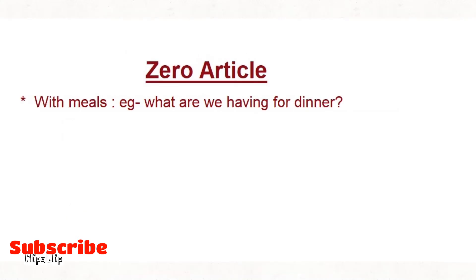The third rule is with meals. How do we say it — 'What are we having for dinner?' or 'What are we having for the dinner?' It is wrong to say 'the dinner', 'the breakfast', or 'the lunch'. The correct form is 'What are we having for dinner?' — zero article with meals.